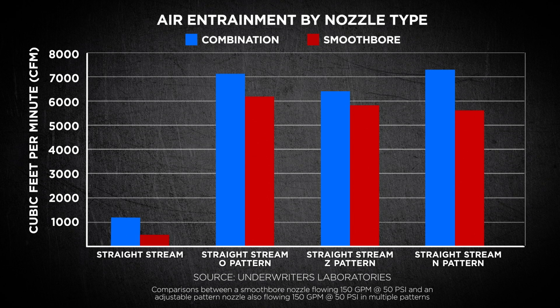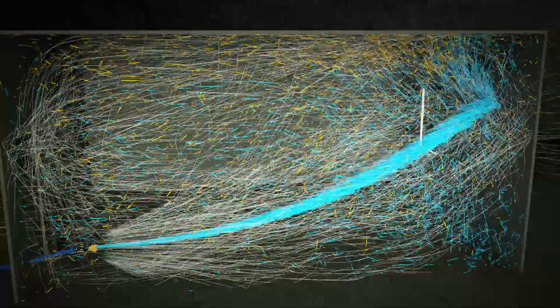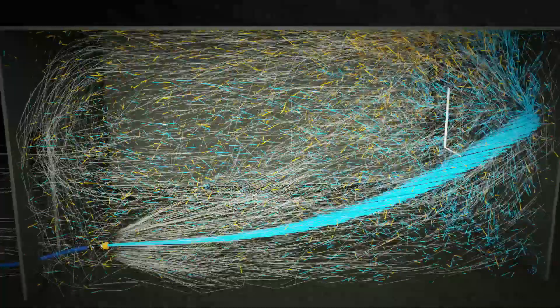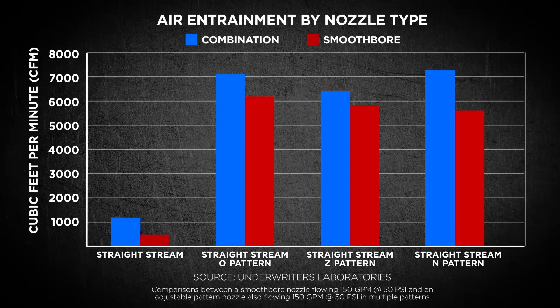So what do all these hard facts mean to us on the fire ground? First, we must always consider the massive amounts of air our fire streams have on the fire attack process while inside the fire compartment, with special consideration toward the ventilation condition. Second, we can see in these very simple tests that a solid or straight stream being moved in the patterns we have been taught has similar air movement volumes to that of a fog stream.